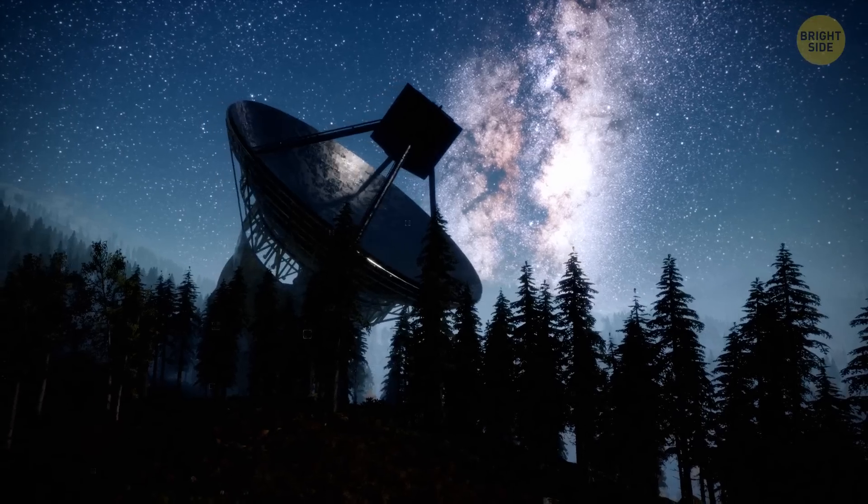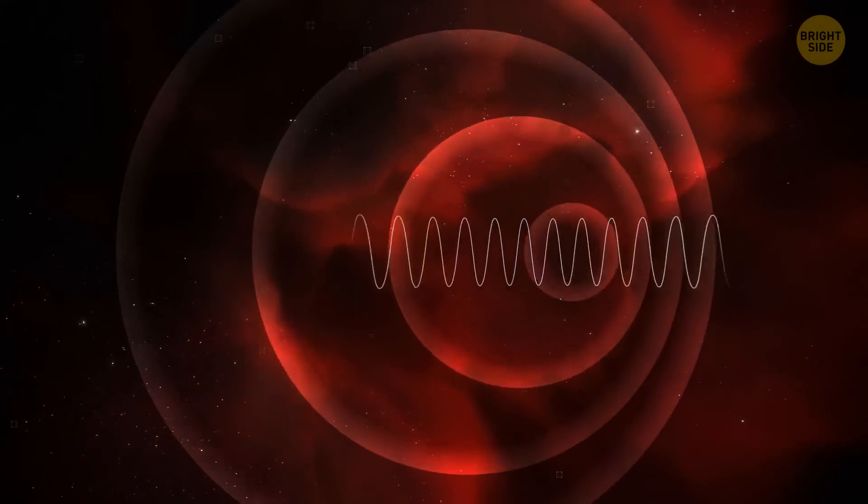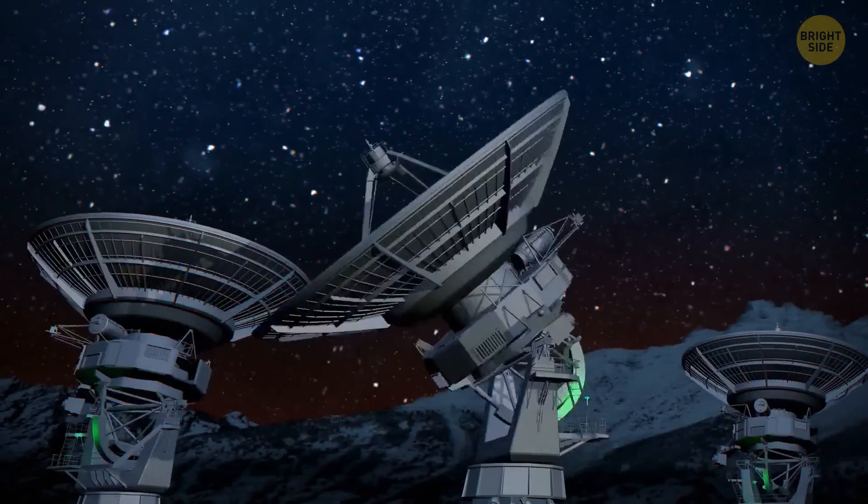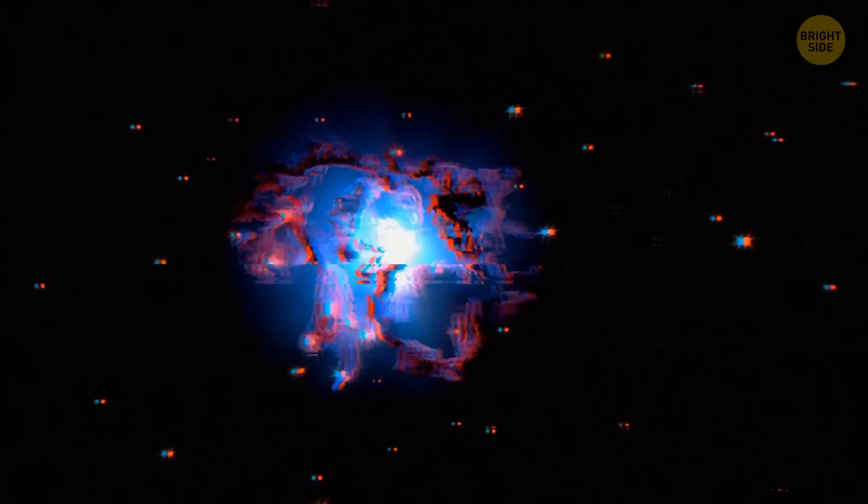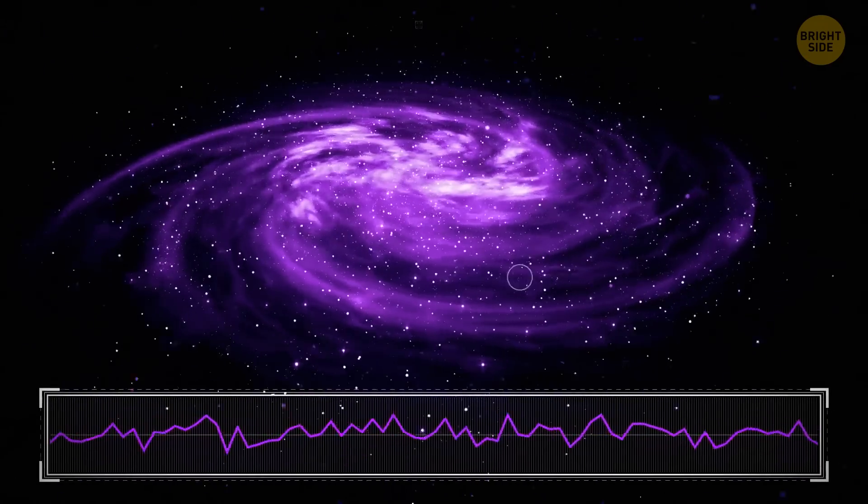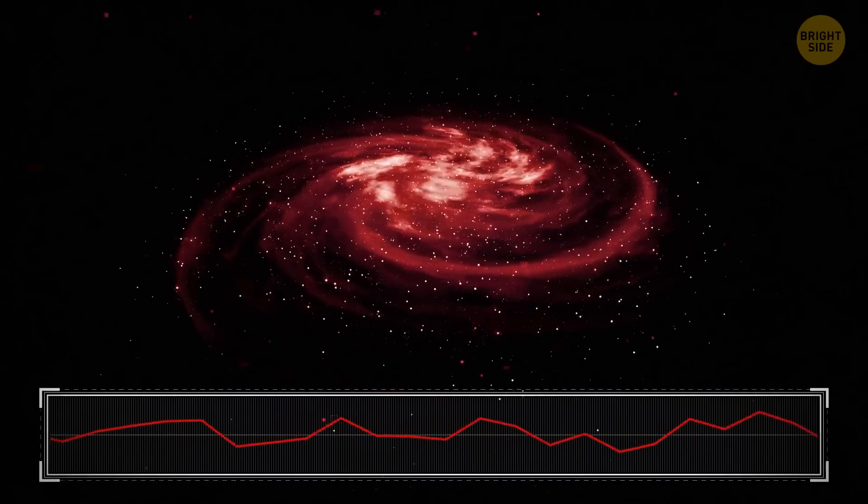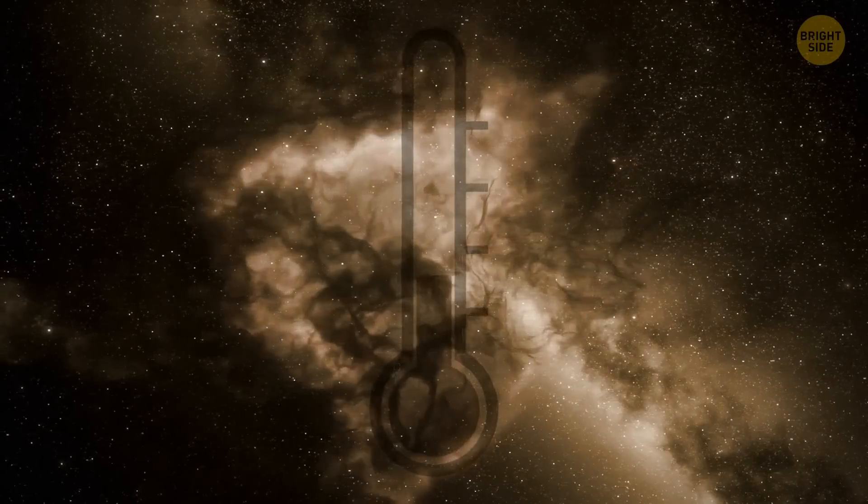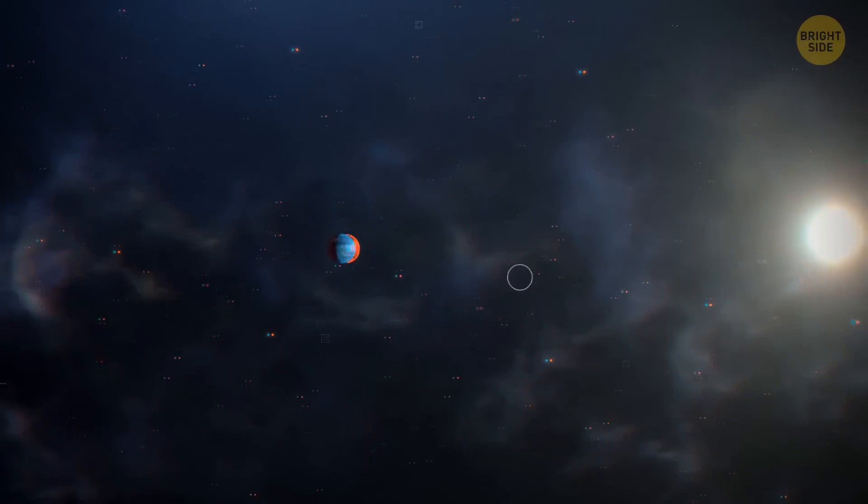They found out the temperature in space increased by measuring cosmic gases using something called redshift. They generally use this method when they want to see how far away some space objects are. Those that are closer to us have shorter light wavelengths. The farther some object is, the longer its light wavelengths are. And they can now determine the temperature of a certain object from its light.